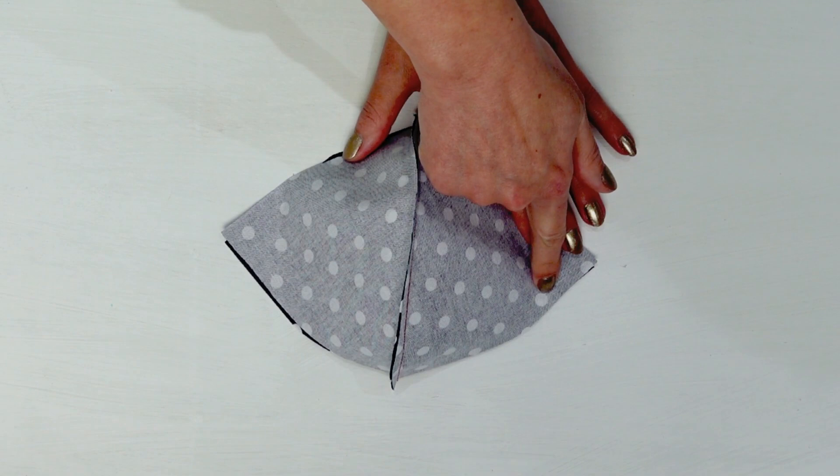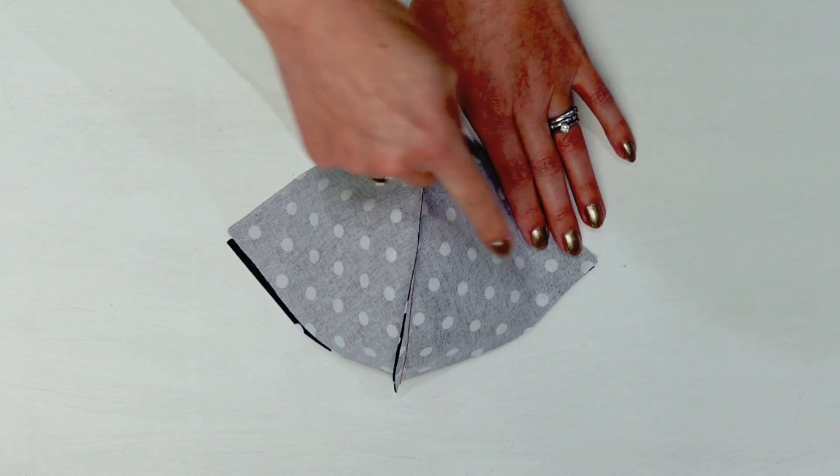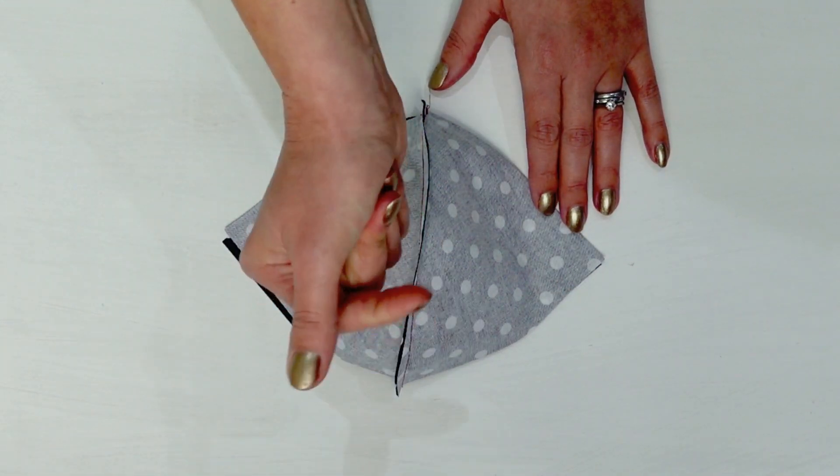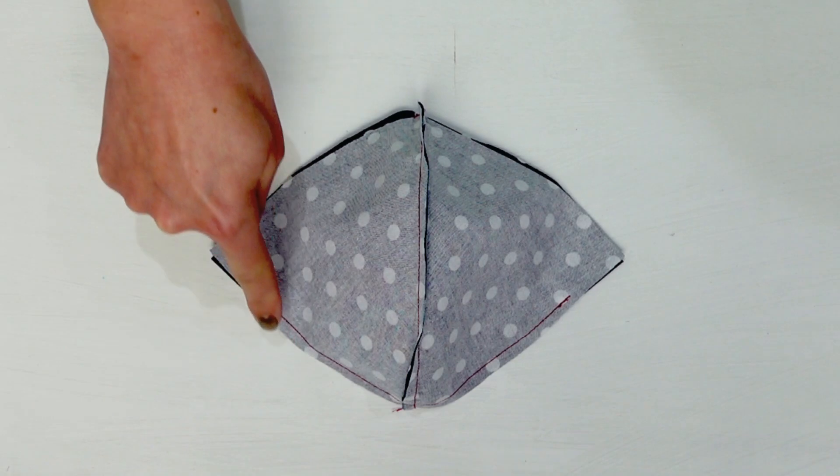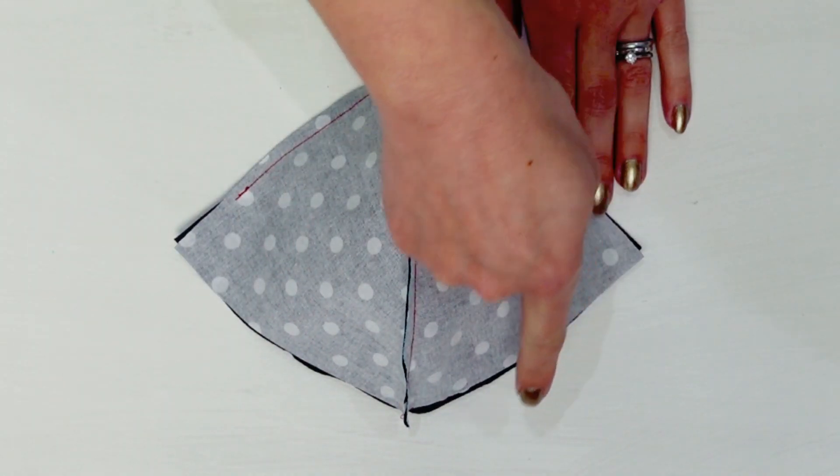You now need to sew across that curve from one side to the other, but you need to leave a gap at each end. Then flip it around and repeat the same on the other side.